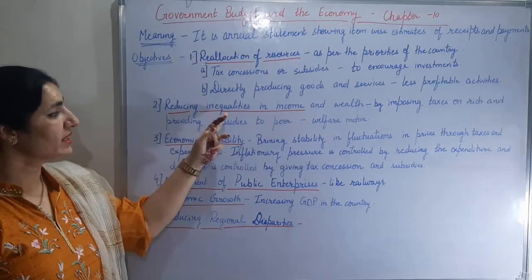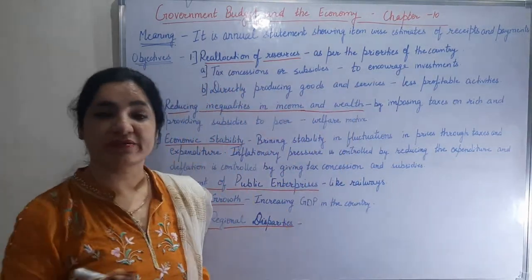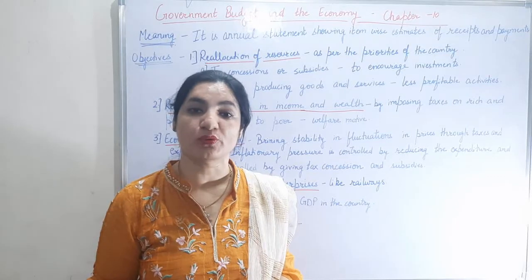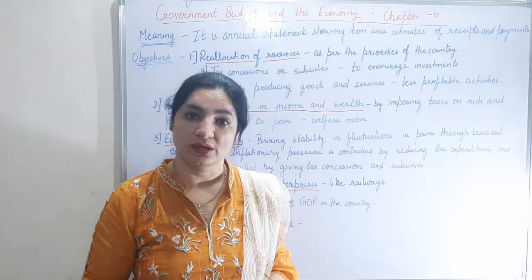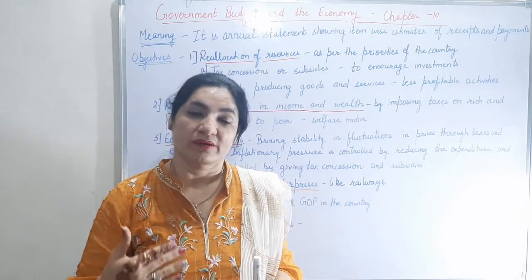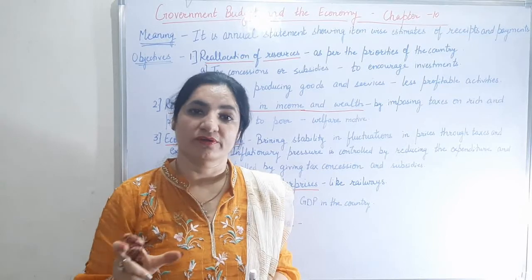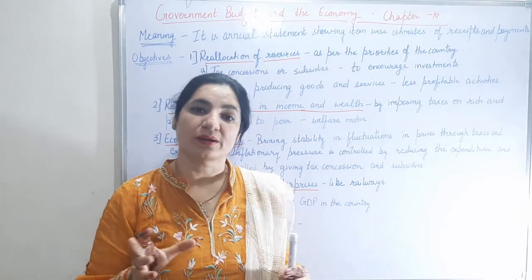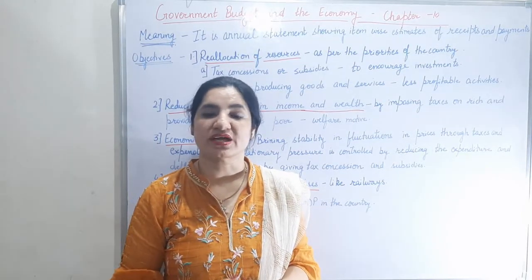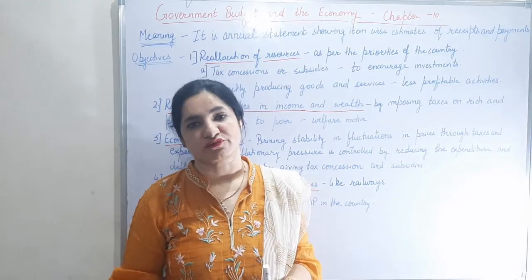Next is reducing inequalities in income and wealth. Inequalities can be reduced by imposing more taxes on the rich and less or no taxes on the poor, or by providing subsidies to the poor. In a country like India, where rich people are fewer and poor people are more, government has a slab system of imposing taxes. Those who are more rich have more income, so more taxes are imposed, and as income reduces, the percentage of tax also reduces.